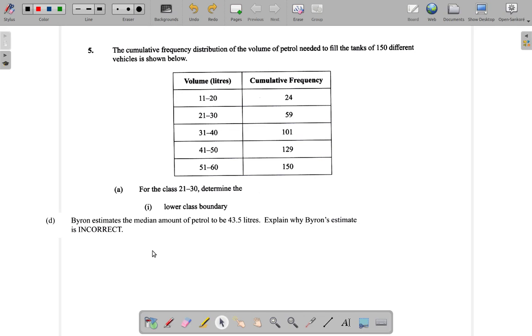Alright, let's see now. If it is 43.5 liters, it would mean that the class in which it would fall would be this one, the 41 to 50 liters. But is that correct?